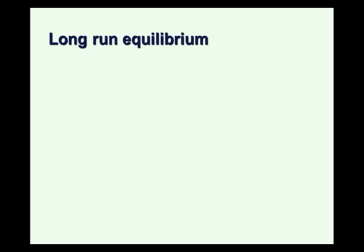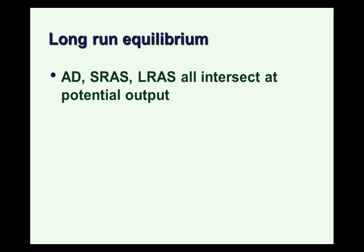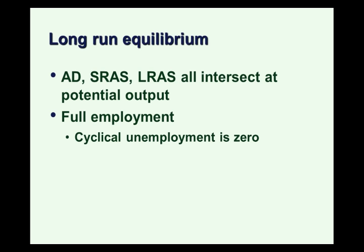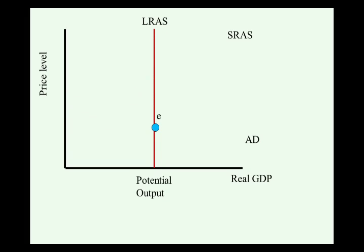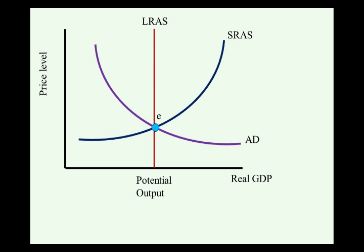Let's start with the long run equilibrium. In the long run equilibrium, we're going to have an intersection of aggregate demand with the two kinds of aggregate supply curves — aggregate demand, short run aggregate supply, and long run aggregate supply all intersect at potential output. Long run equilibrium would be characterized by full employment, so the unemployment rate will be at about the natural rate, with cyclical unemployment equal to zero.